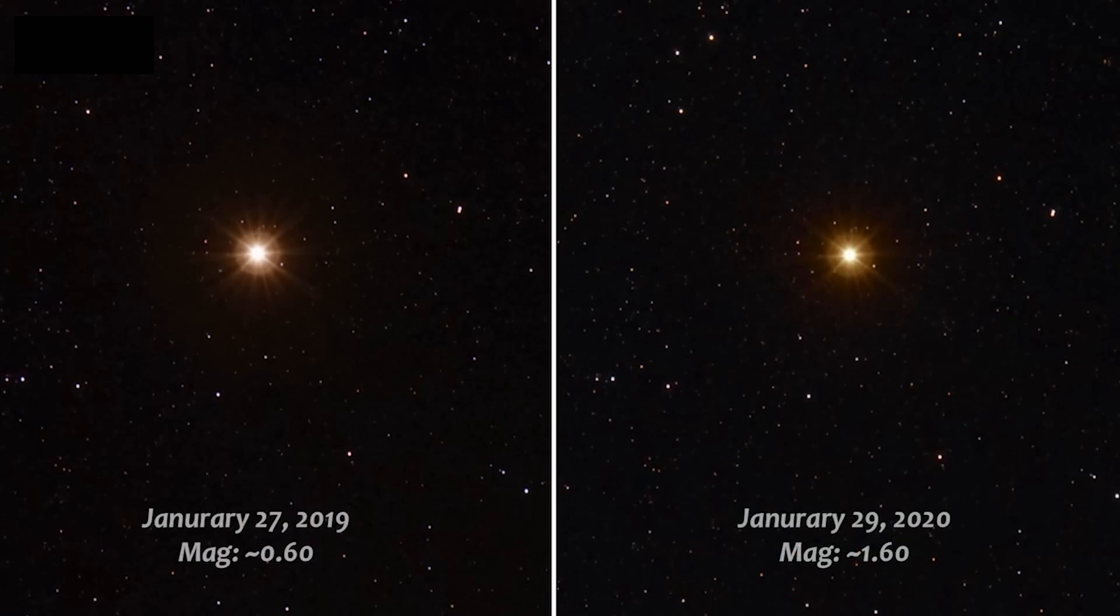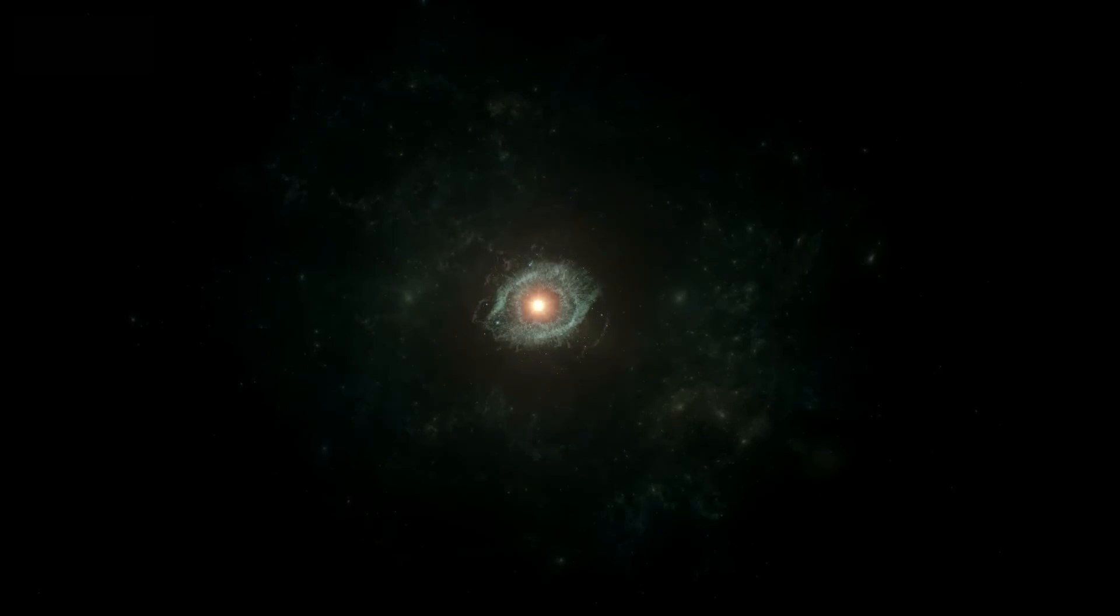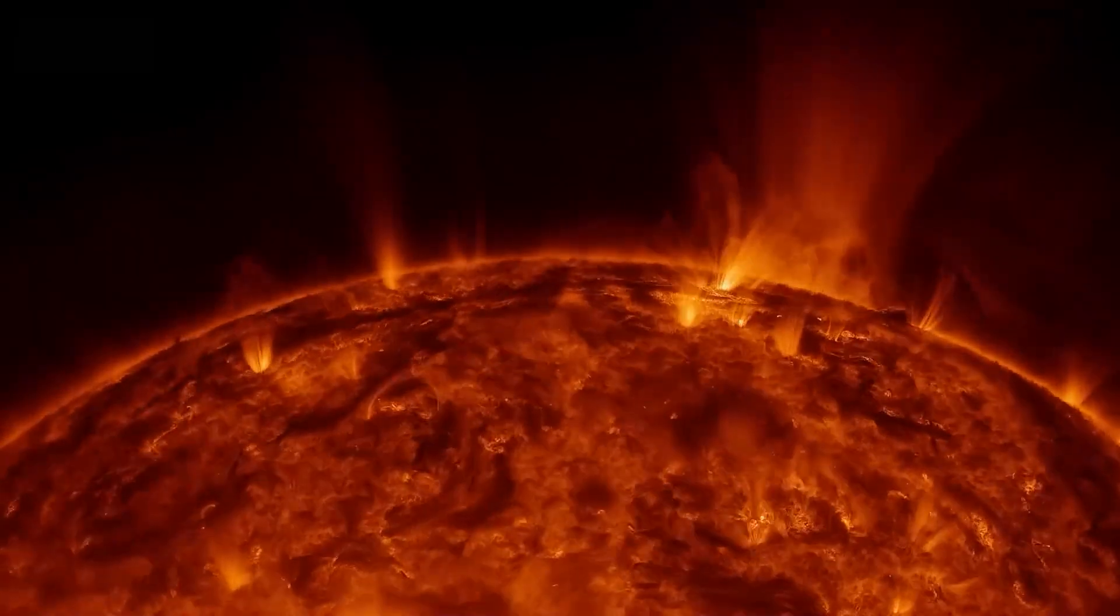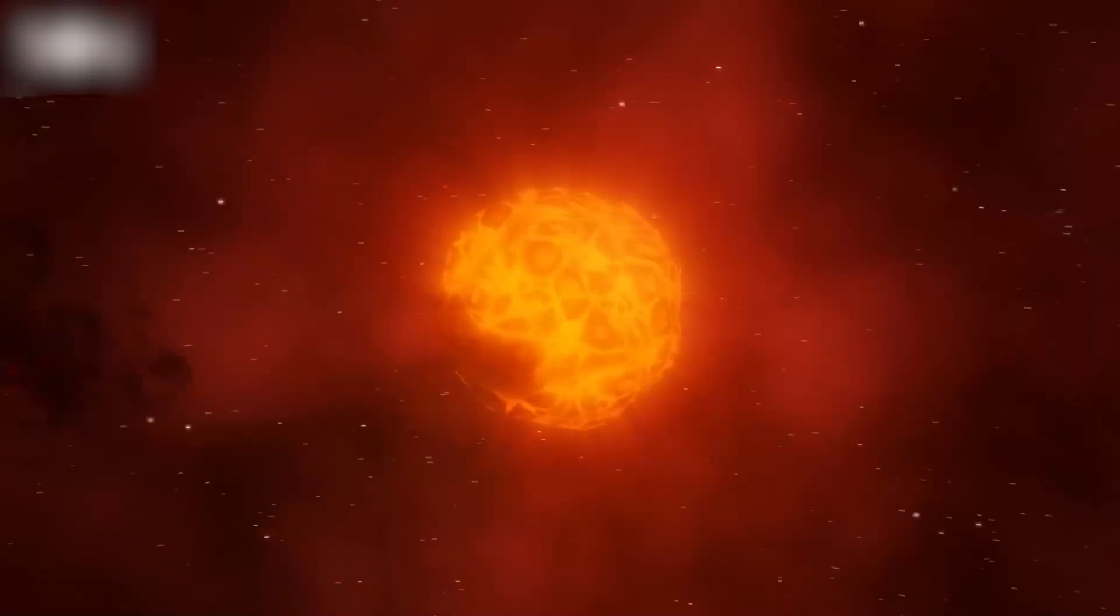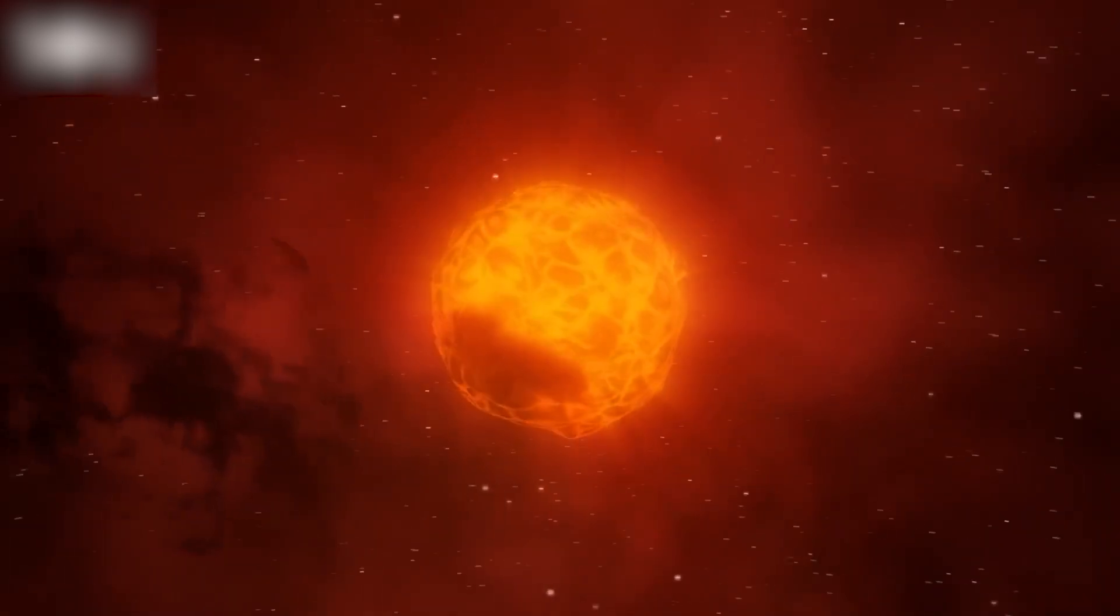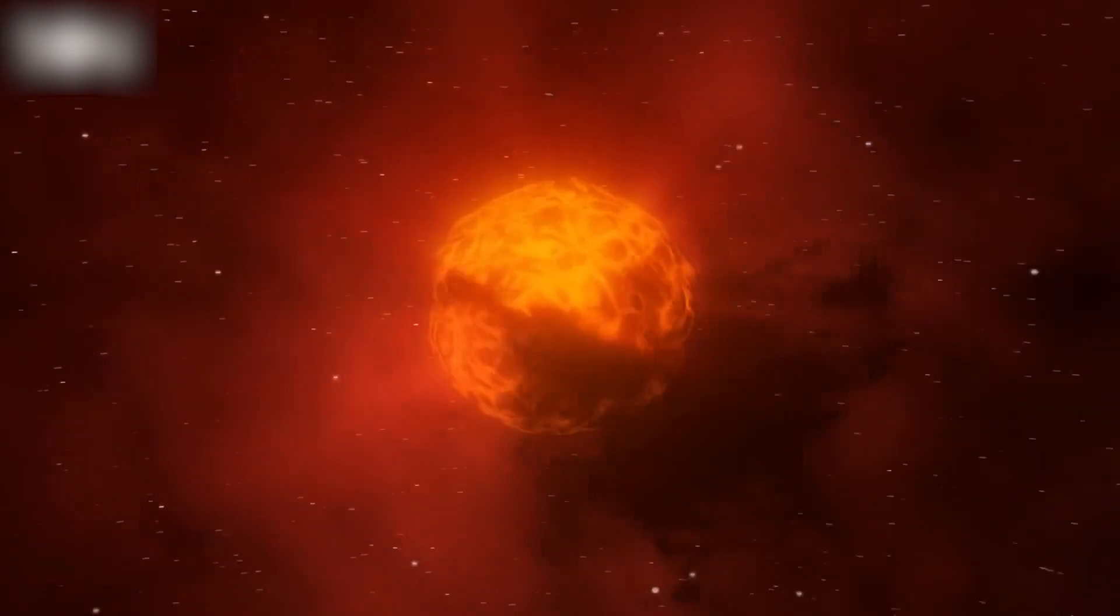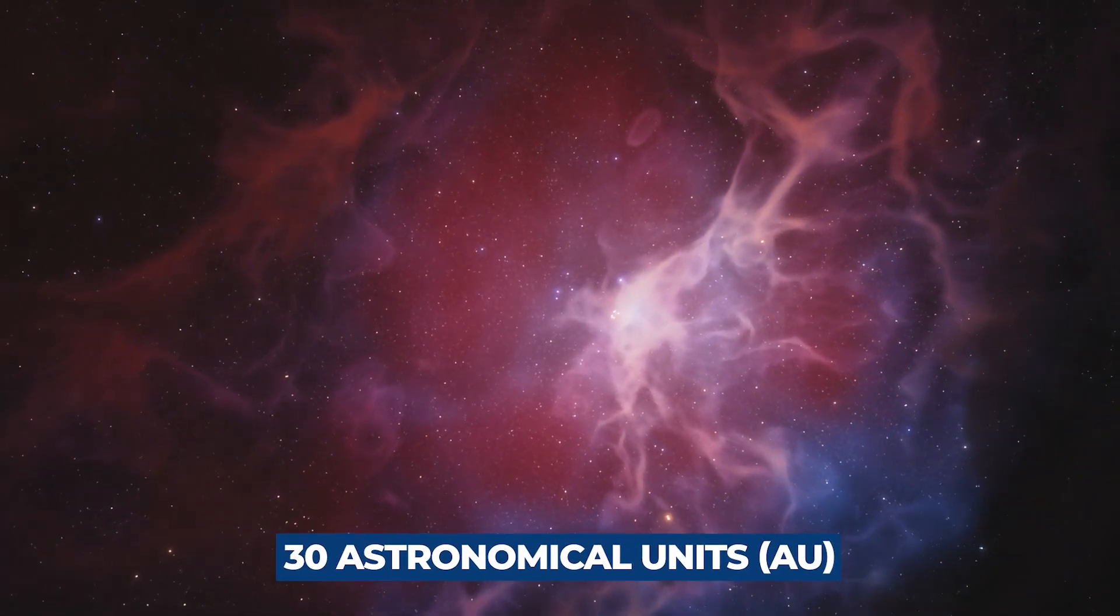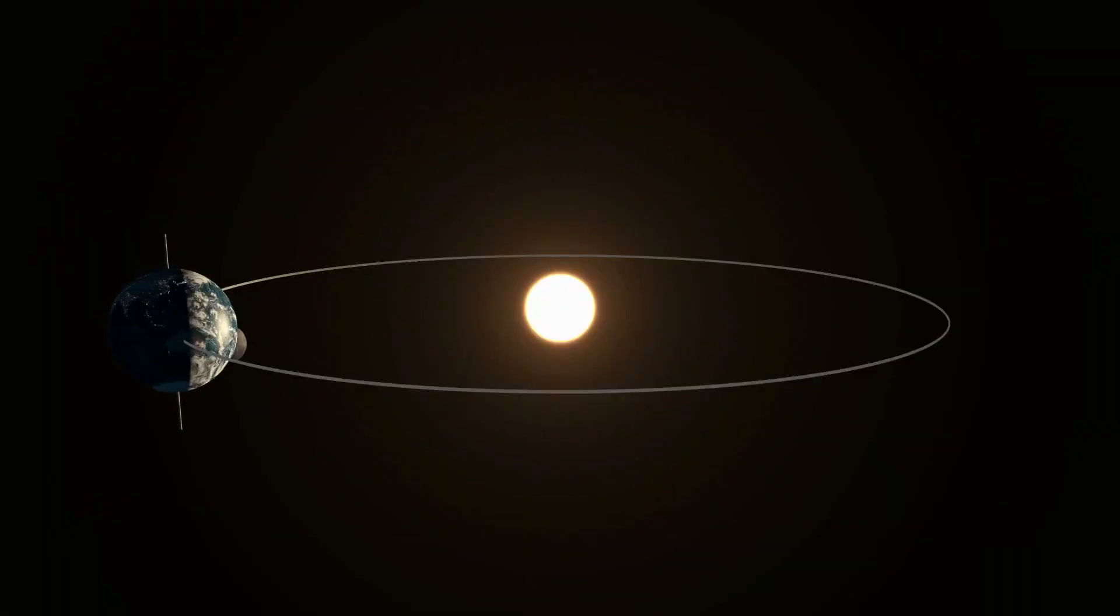Betelgeuse loses around one solar mass every 10,000 years as a nebula surrounds the red star due to material being released unevenly from the star in all directions. Betelgeuse is surrounded by a cloud of material that is 250 times the size of the star and the size of the nebula is 30 astronomical units, or 30 times the distance between the Earth and the Sun.